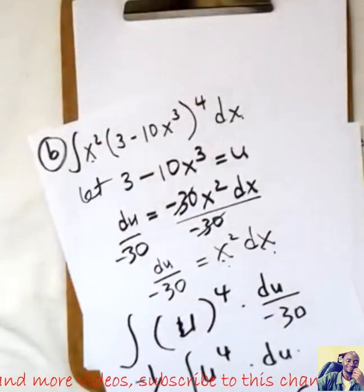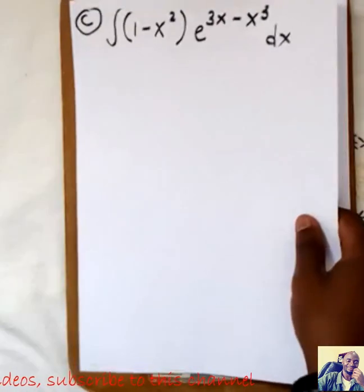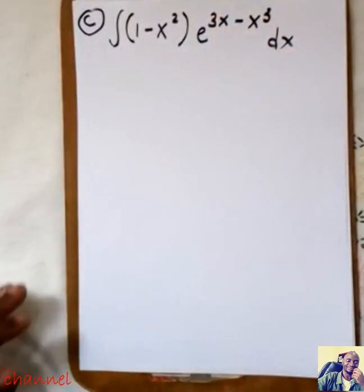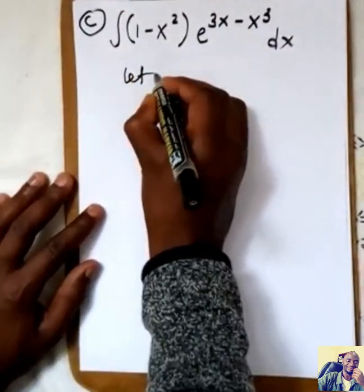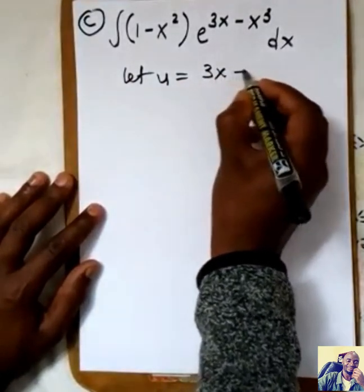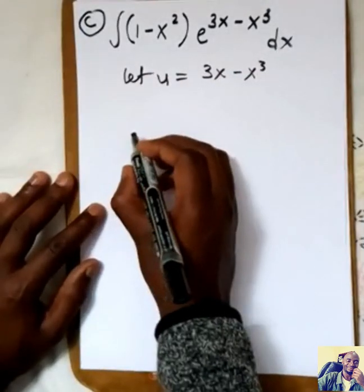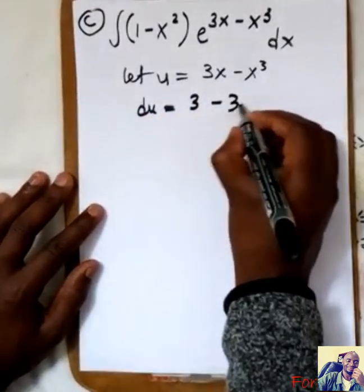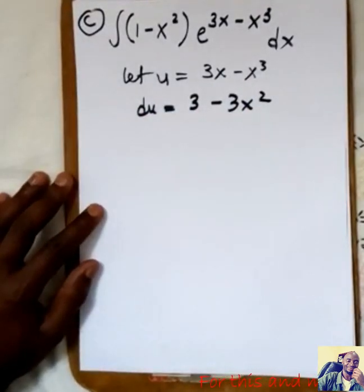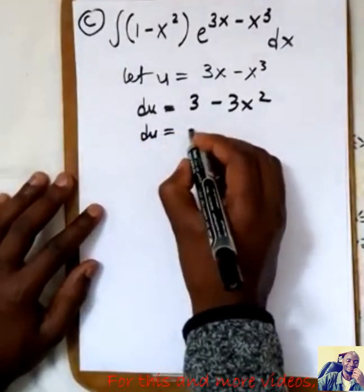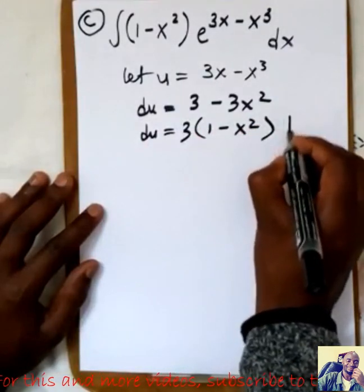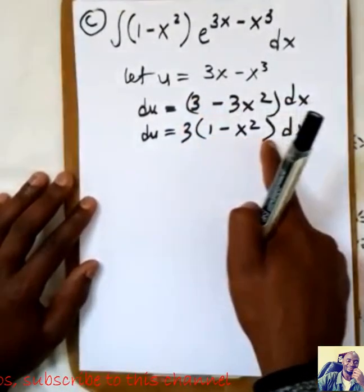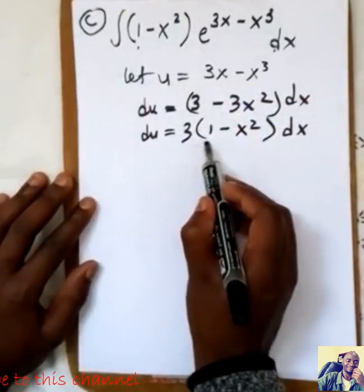Moving to part C. From the standard chart, you can easily see what to make U. We let U equal 3x minus x³. Finding DU: differentiating gives DU = (3 - 3x²) DX, and factoring out 3 gives DU = 3(1 - x²) DX. You can see that the factor (1 - x²) DX is present in the original integral, so we can substitute DU/3 for that part.